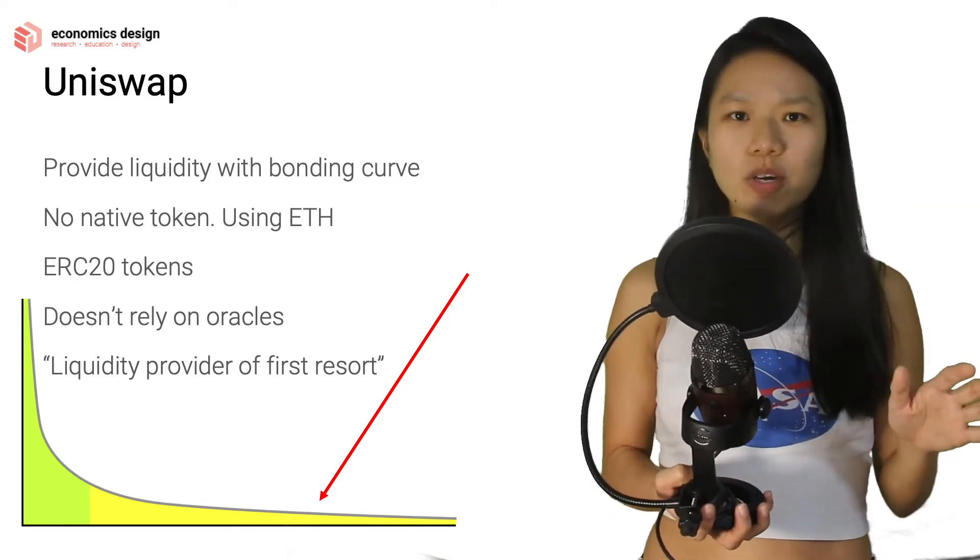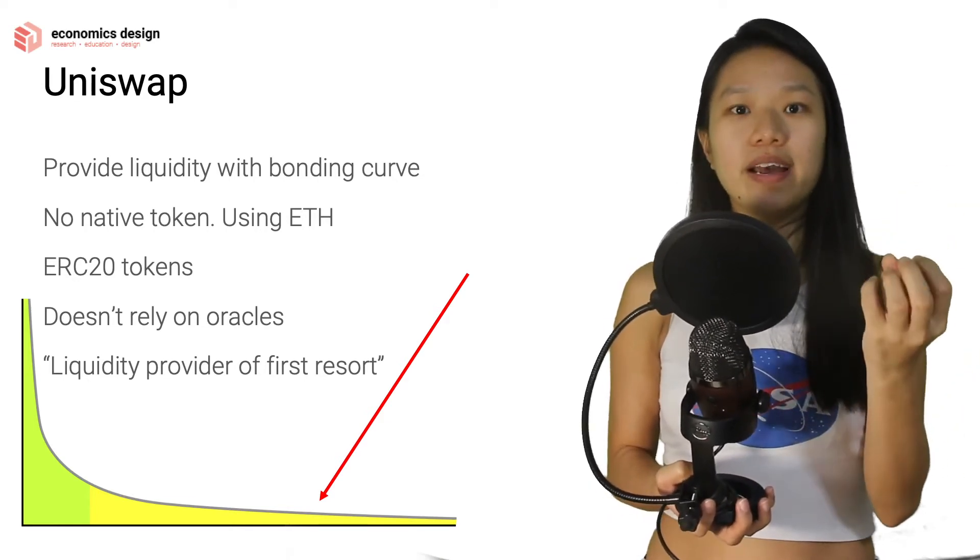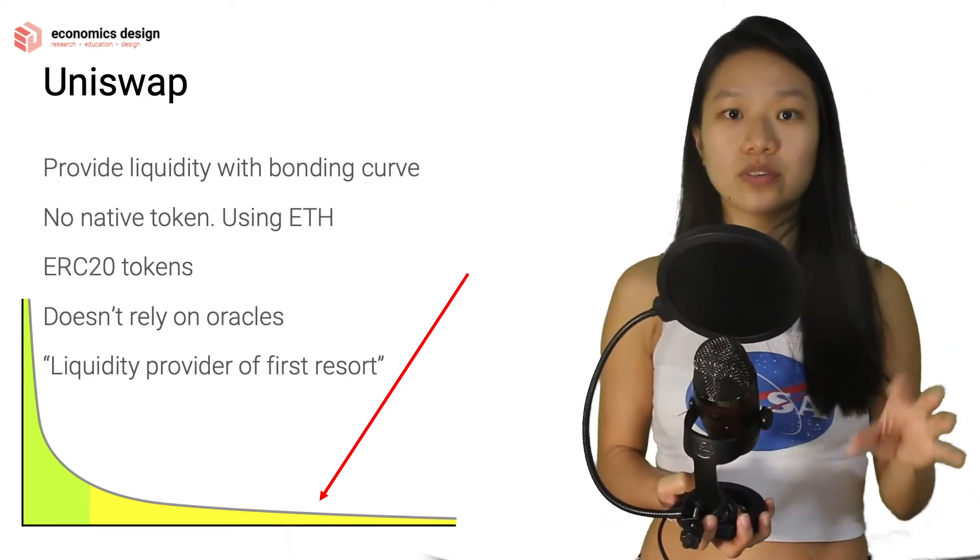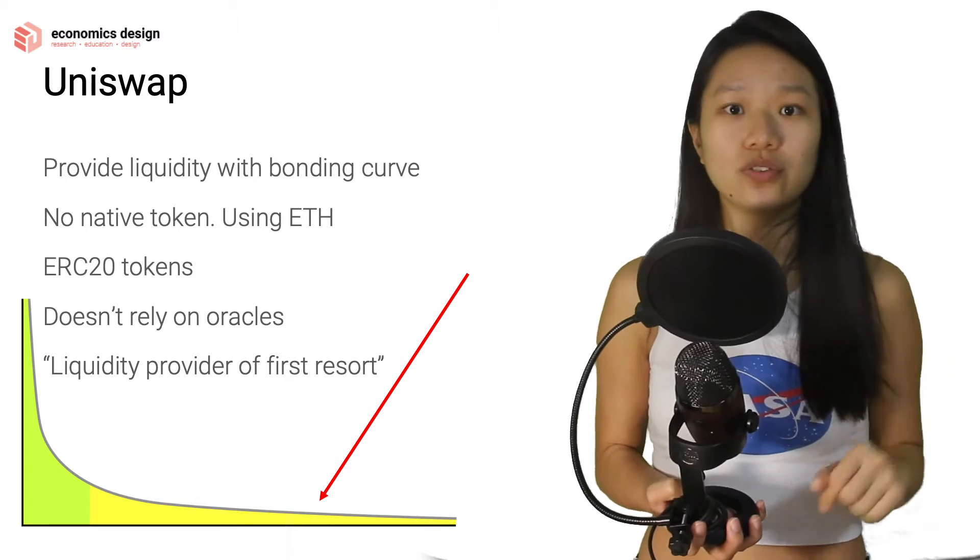With Uniswap, it's so much simpler because they just have these token swaps or these token exchanges between all the ERC20 tokens. So they don't need their own tokens, they just use Ethereum.